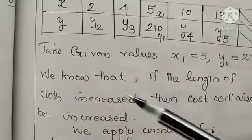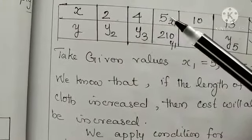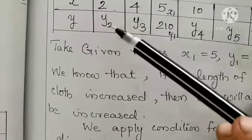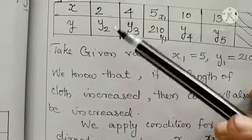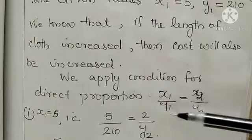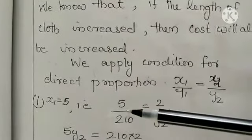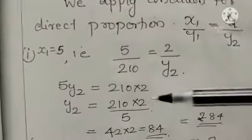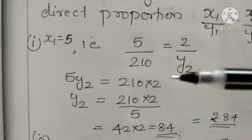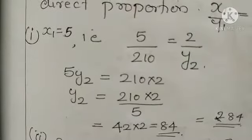Here the first unknown is y2. So given values we can take as x1, y1. The unknown values we can take as x2, y2. Substitute the values again in the condition. We can write 5 by 210 and first column 2 by y2. Cross multiply and calculate. You can get 42 into 2, 84. So rupees 84 for 2 meters of cloth. Understood?